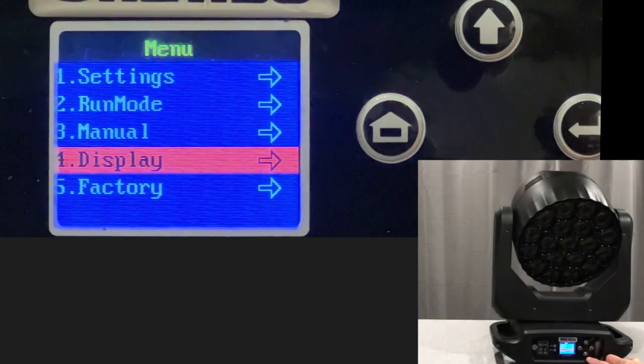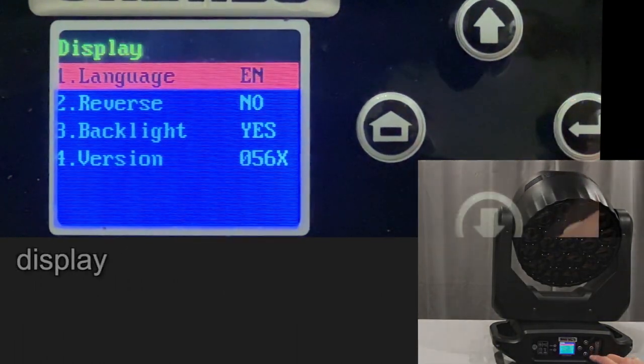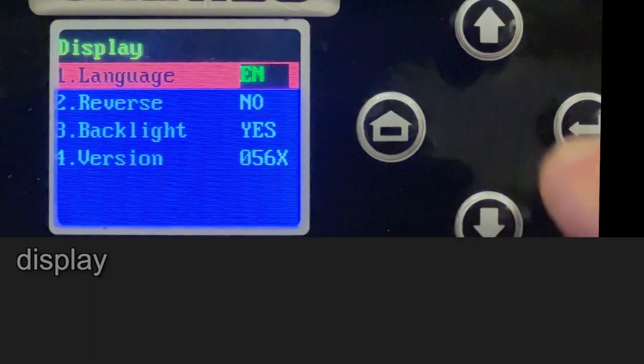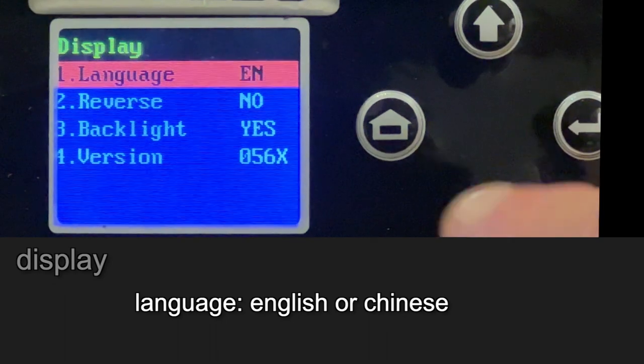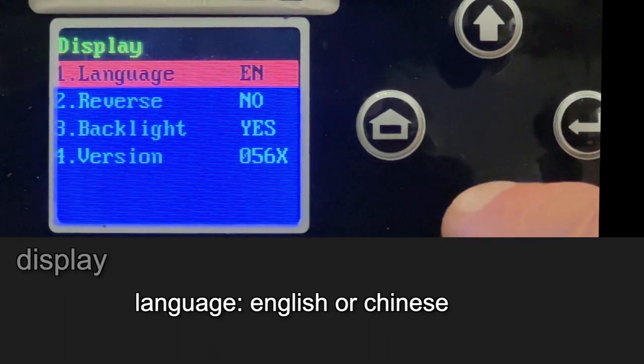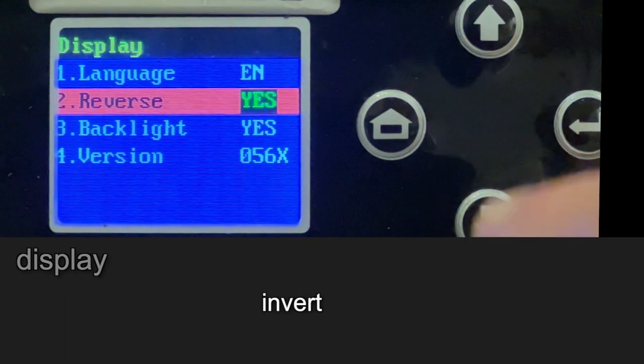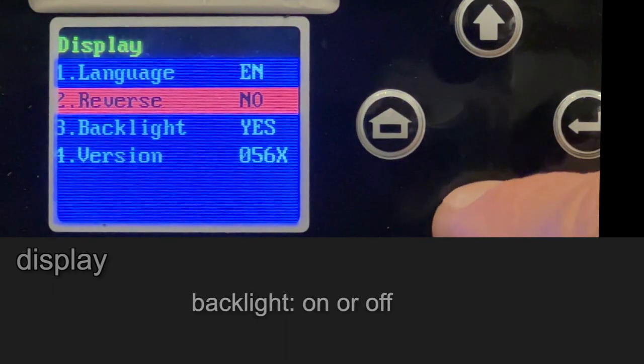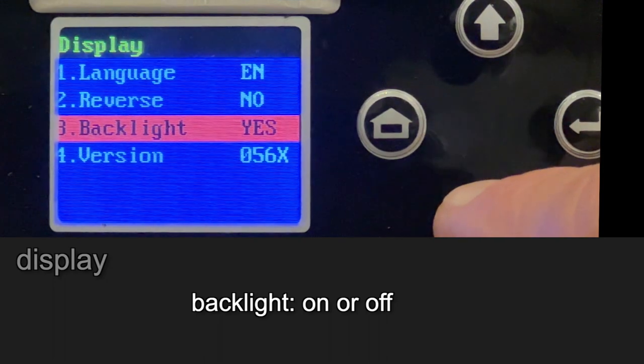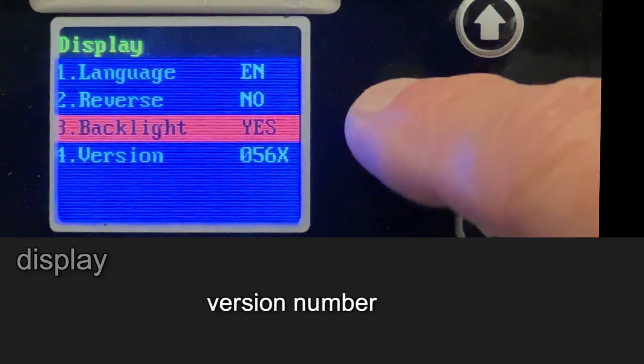You can also go into the display settings. You can change the language from English to Chinese, you can invert the display, you can turn the backlight on and off, and you can see the version number.